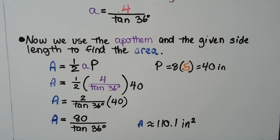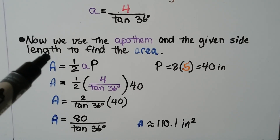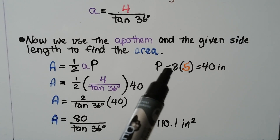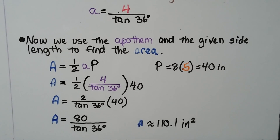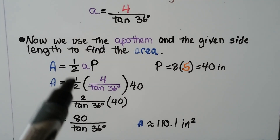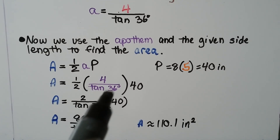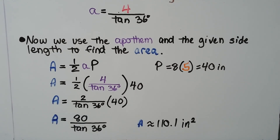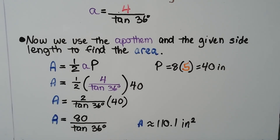Now we've found our apothem and use it with the given side length to find the area. Our formula is area equals half the apothem times the perimeter. It's a pentagon with eight inch sides, so we have a 40 inch perimeter. We compute ½ × (4 / tan 36°) × 40, which simplifies to 80 / tan(36°), giving us approximately 110.1 inches squared.